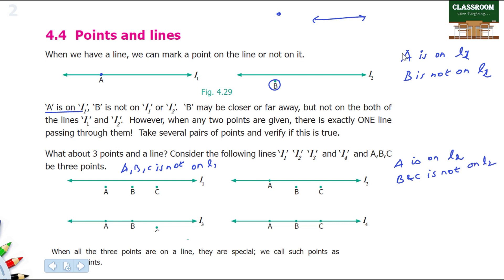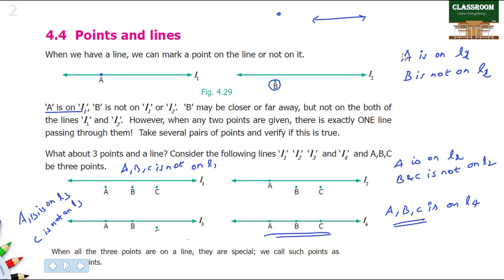A and B are on line 3. C is not on line 3. In this example, A, B, C — three points are on line 4. When all three points are on a line, they are special. We call such points collinear points. This is an important topic.